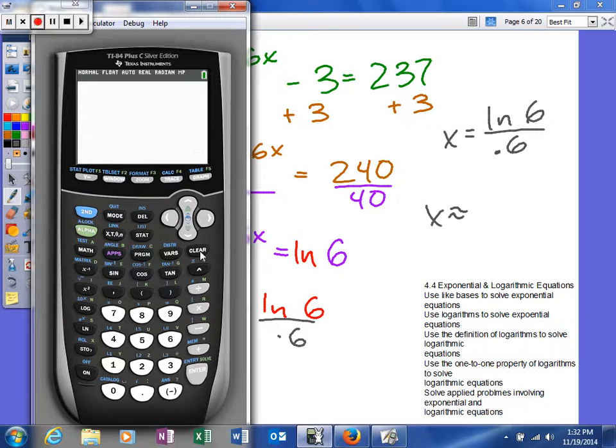So clear. Natural log of 6 divided by .6. Oops. So I get 2.986.